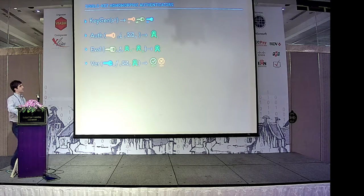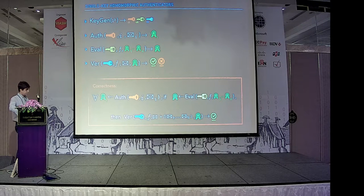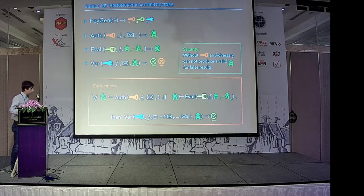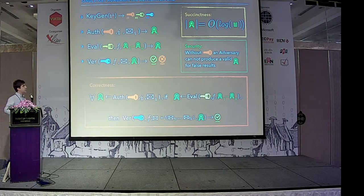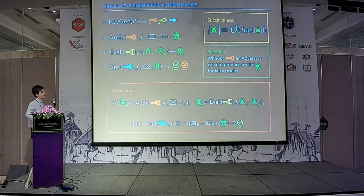Which properties do we want for such a cryptographic tool? First, we want correctness: if authenticators have been computed honestly and we feed them to the evaluation procedure, the output must pass verification. We also want security: intuitively, without the secret key, an adversary cannot produce a valid authenticator for false results of the function. Last but not least, we want succinctness: the size of an authenticator should be logarithmic in the size of the dataset.